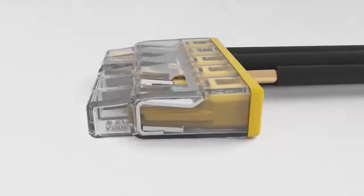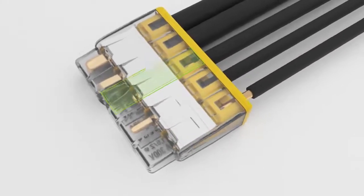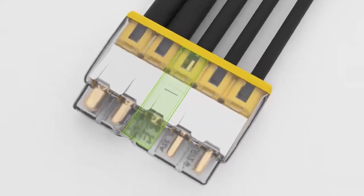The transparent housing permits visual inspection of the conductor position. If conductors are not inserted far enough, they're easily identified.